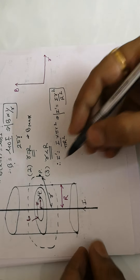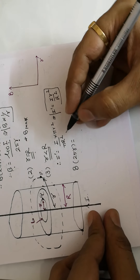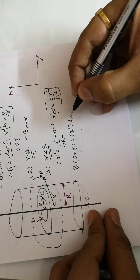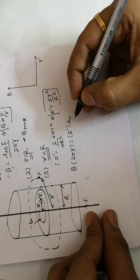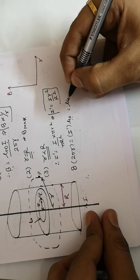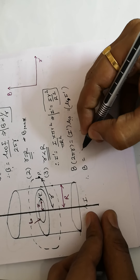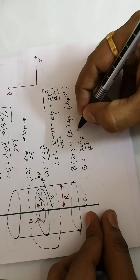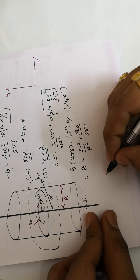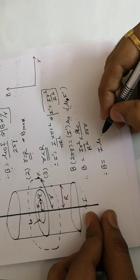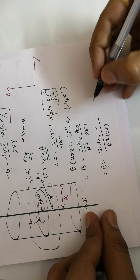Using Ampere's law for the inner region: B times 2 pi r equals mu zero (or mu, for a material conductor) times I'. Substituting I' equals I r squared divided by R squared, and simplifying, B equals mu zero I r divided by 2 pi R squared. Therefore, B is directly proportional to r inside the wire — as r increases toward R, the magnetic field increases linearly.